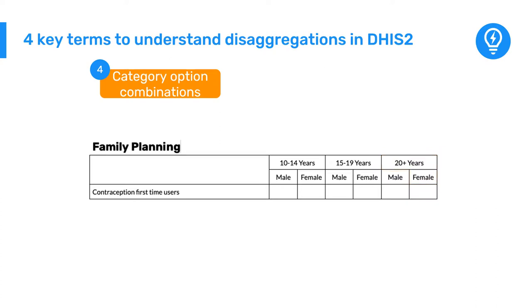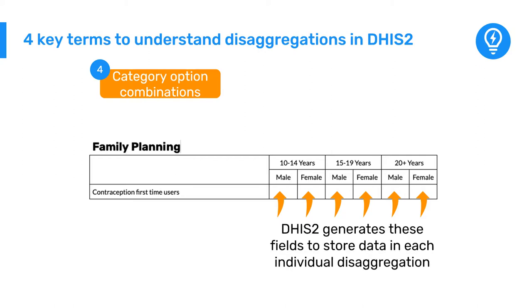If we look back at our dataset, we see that each of these combinations represent a cell in our reporting table. This is not a coincidence. DHIS2 has to generate those fields for you to store data in each individual disaggregation when you enter your data in the system.